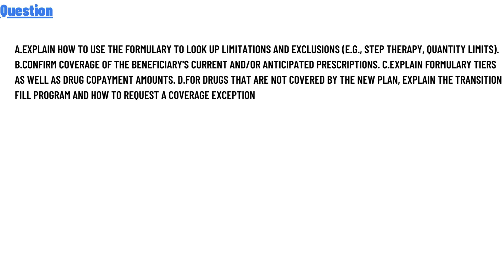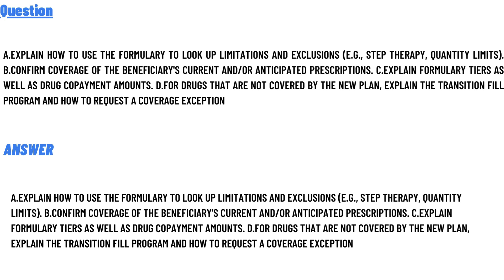The correct answer is Option A — explains how to use the formulary to look up limitations and solutions, including step therapy and quantity limits. Option B covers the beneficiary's current and/or anticipated prescriptions. Option C explains formulary tiers and drug copayment amounts. Option D explains the transition field programs and how to request coverage exceptions.